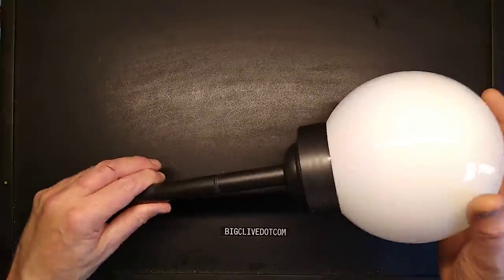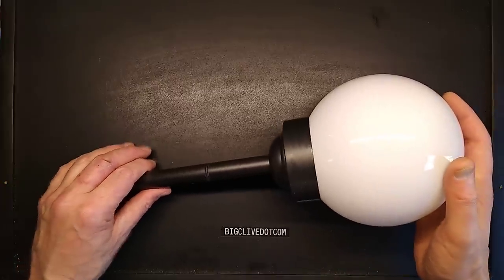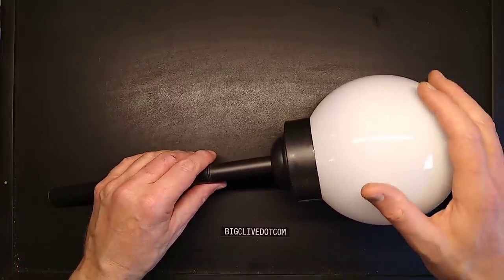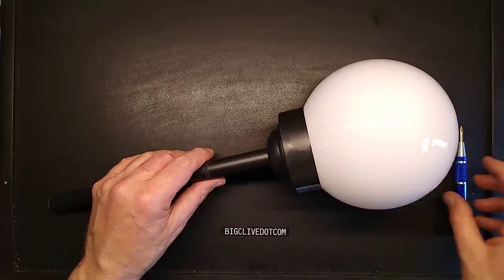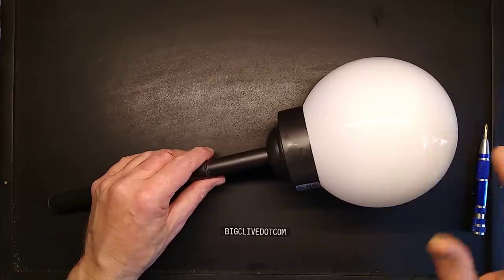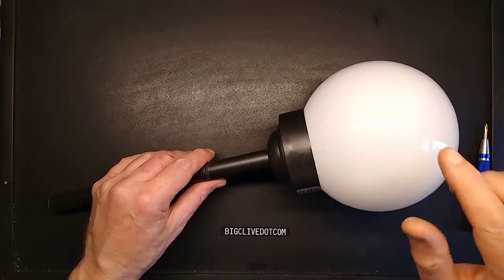Let's take a look at Lidl's solar globes because they're actually quite nice. They do two versions: a warm white version and a color changing version. The color changing version I've got mixed thoughts about it, but I'll show you what's inside.